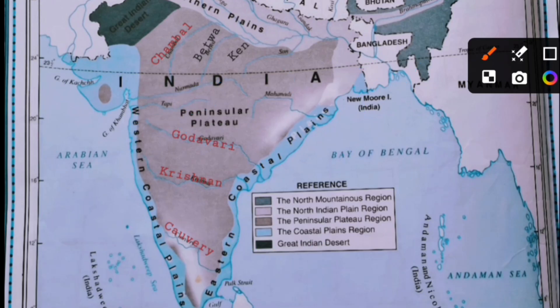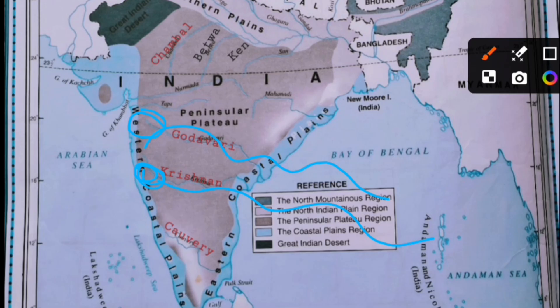Godavari is the largest peninsular river — it starts near Nasik and flows into the Bay of Bengal. The second largest peninsular river is Krishna — it starts near Mahabaleshwar and also flows into the Bay of Bengal. Both Nasik and Mahabaleshwar are in Maharashtra, so both rivers originate in Maharashtra but at different places.